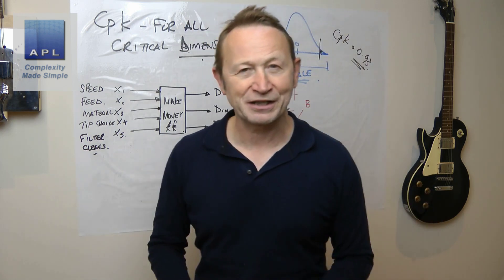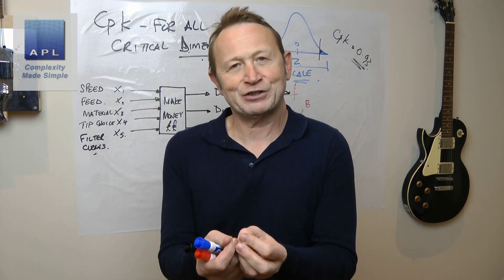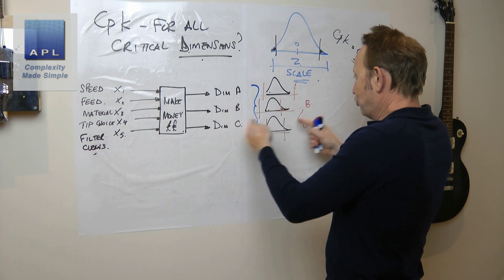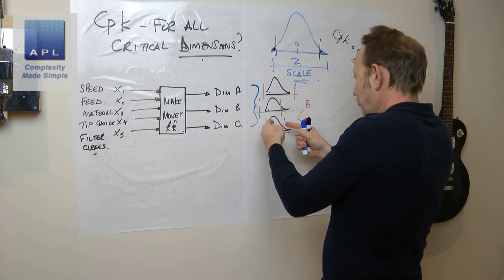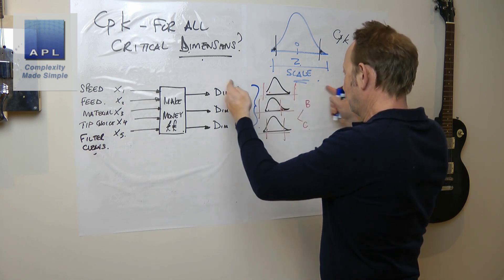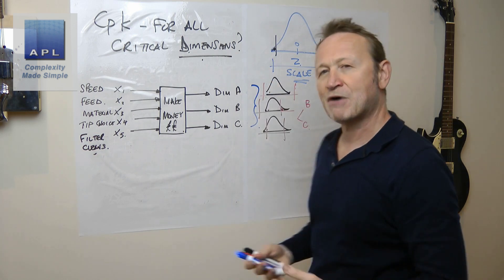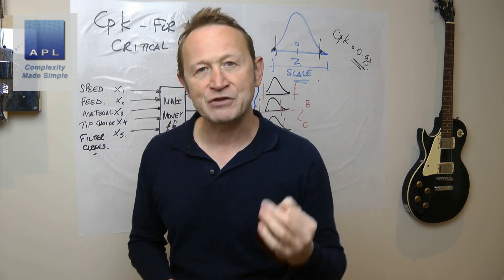Why don't you just work out the three CPKs for the three critical dimensions? Because these tolerances could be wider or narrower. The tolerances aren't necessarily the same, they might not even be in the same units.